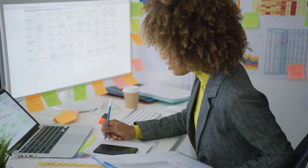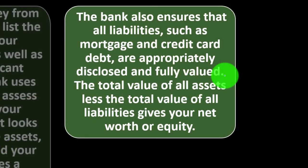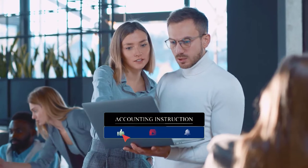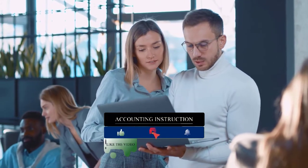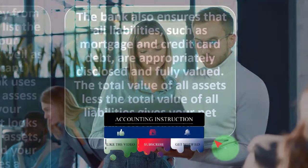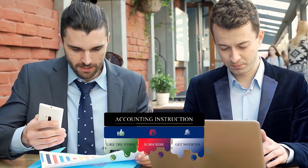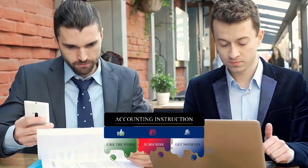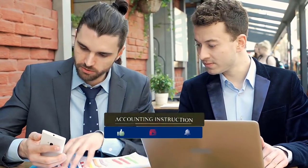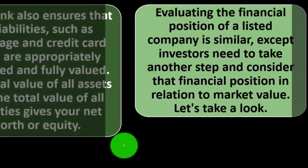The total value of all assets less the total value of all liabilities gives your net worth or equity. For an individual, assets minus liabilities might be called net assets. For a company, assets minus liabilities is the equity section of the balance sheet — essentially the book value of the company, and a starting point for valuing it, though it gets more complex than that.